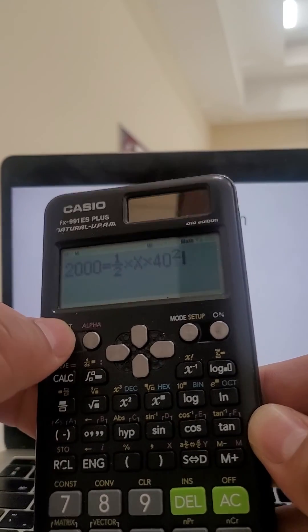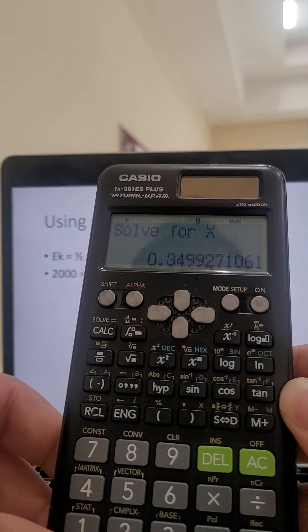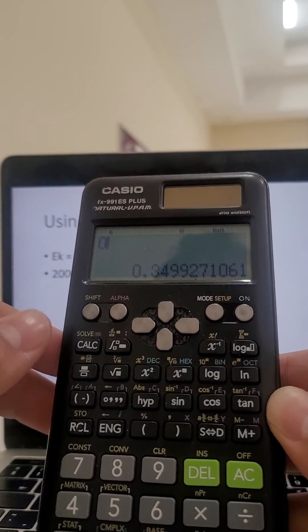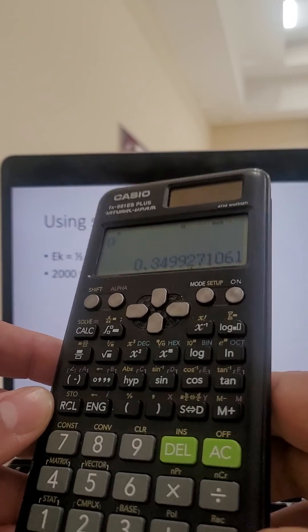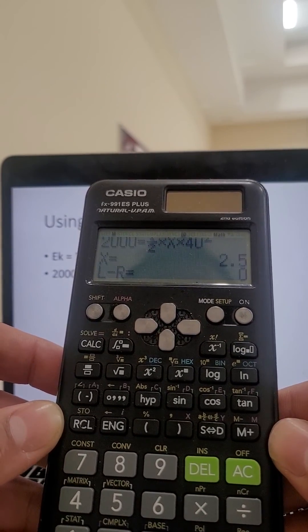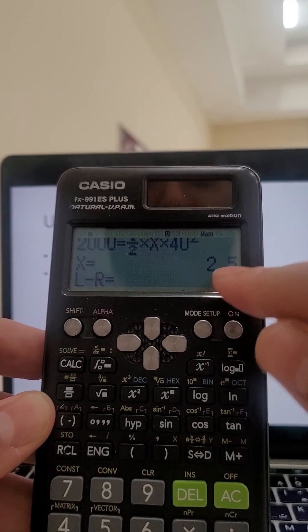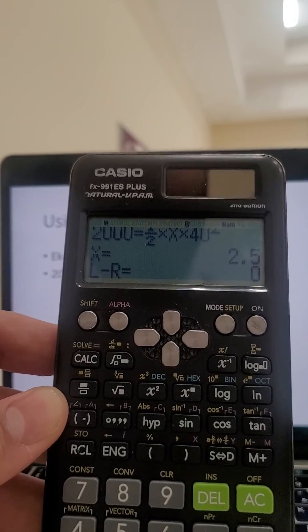Once I've done that, I'm going to press shift solve 0. Ignore anything you see here. You just do shift solve 0 every time. Once you've done those three buttons, you will get your answer. x is 2.5. So there you go.